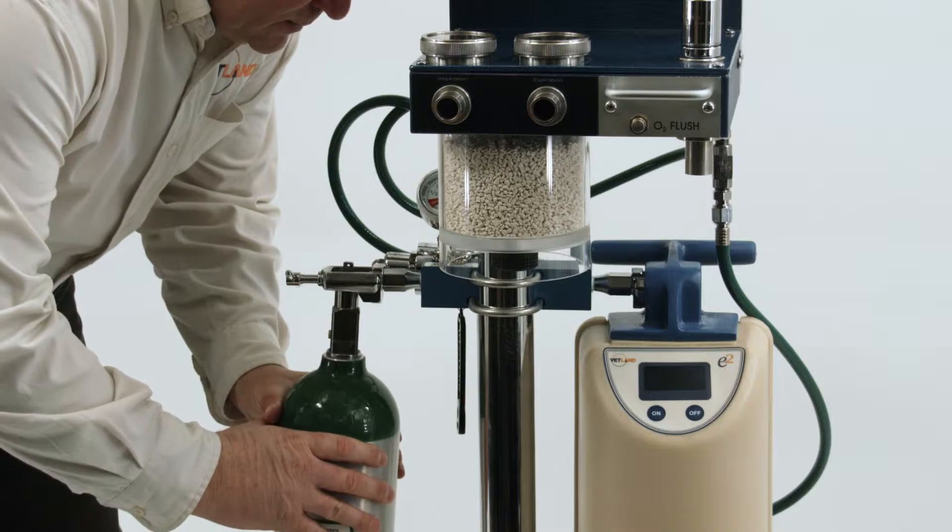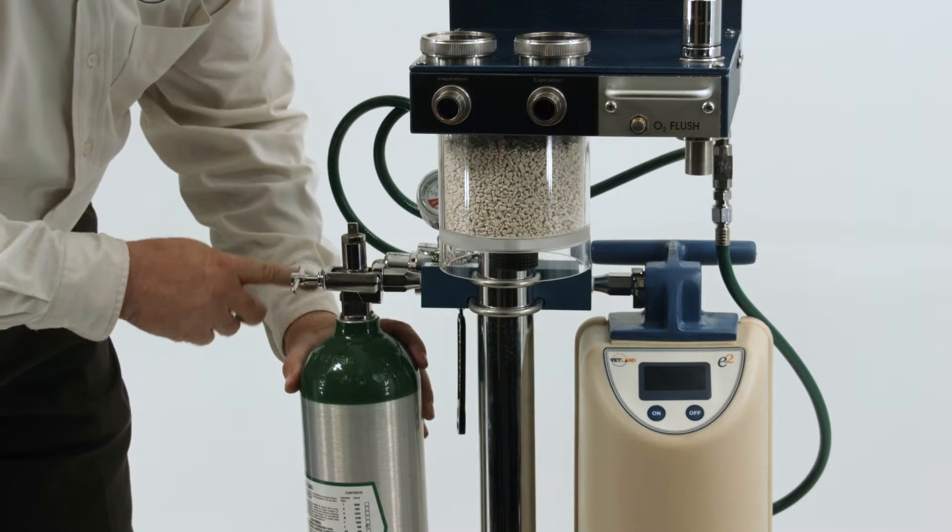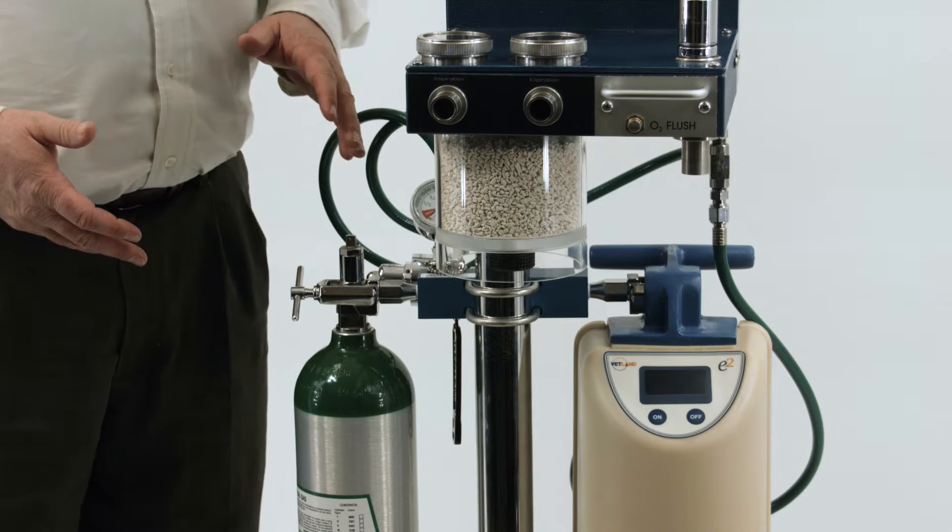Next we'll attach our oxygen E-tank. It slides into position there, it's keyed so you can't get it wrong. If you ever lose power or you're in an emergency, you want to know that this tank is full and ready to go. Then you can reach down, open the tank, and you've got what you need to continue.